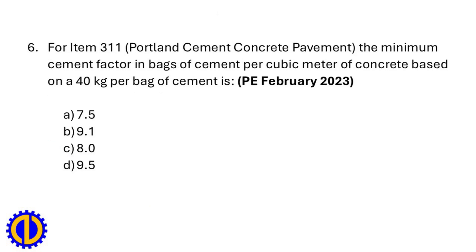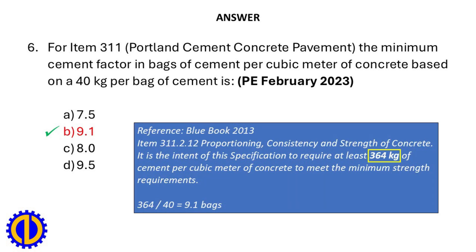For Item 311 Portland Cement Concrete Pavement, the minimum cement factor in bags of cement per cubic meter of concrete based on 40 kg per bag of cement is: a. 7.5, b. 9.1, c. 8.0, d. 9.5. Answer: b. 9.1. Reference: Blue Book 2013 Item 311.2.12 Proportioning — at least 364 kg of cement per cubic meter of concrete is required. Calculation: 364 kg ÷ 40 kg per bag = 9.1 bags.